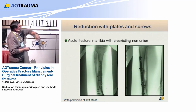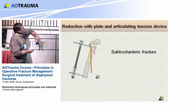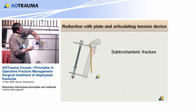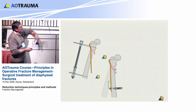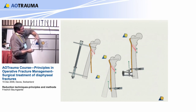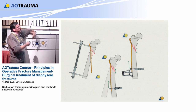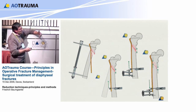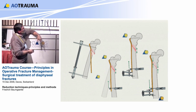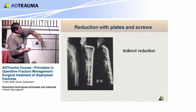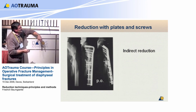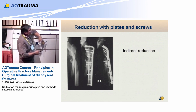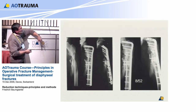A few words about the sub-trochanteric area. You can use the plate as a reduction device in combination with the distractor. Put the plate to the bone, use the articulating tension device for distraction to align the bone as desired, then turn the articulating tension device around and use it as a compression device. This was done in this case using a blade plate — this is essentially an indirect reduction; all of the comminution was left as-is. After eight weeks we see a lot of callus, and after 24 months this is healed very well.